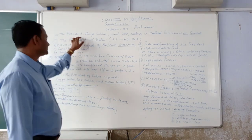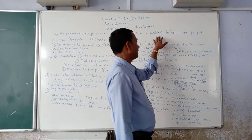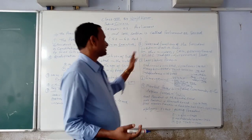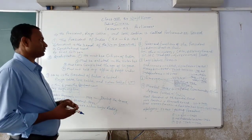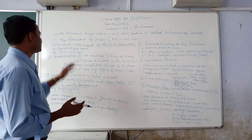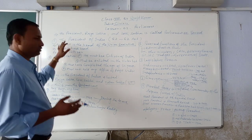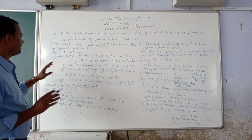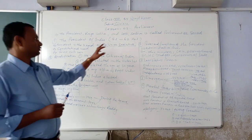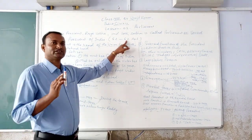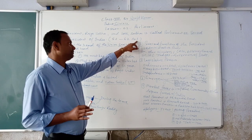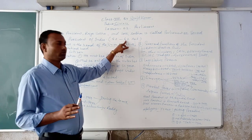Parliament consists of the President, Rajya Sabha, and Lok Sabha — this is called Parliament or Sansad. Parliament and Sansad are both equal. The President of India is covered under Articles 52 to 62 of the Indian Constitution.